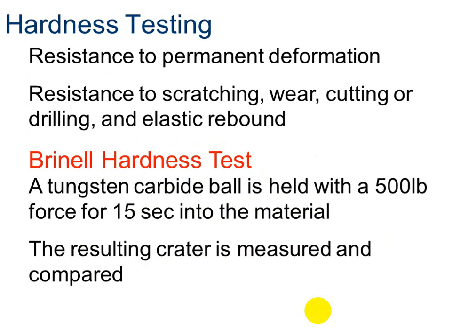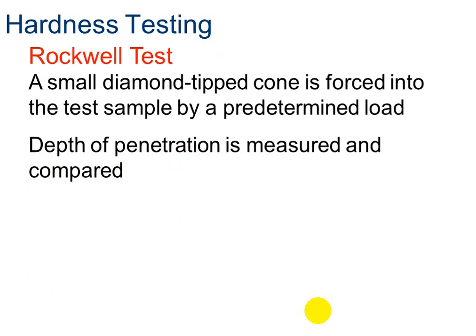We can also test for hardness. The Brinell hardness test uses a tungsten carbide ball held with 500 pounds of force pressed into the material for 15 seconds, then we measure the size of the crater created — that's how we tell if something is hard or soft. Diamonds are the hardest material, so we'd expect very little indentation; aluminum is much softer, so we'd expect a noticeable crater. The Rockwell test is also a hardness test where a diamond-tipped cone is forced into the test sample, and you measure how far it penetrates — softer materials have more penetration.